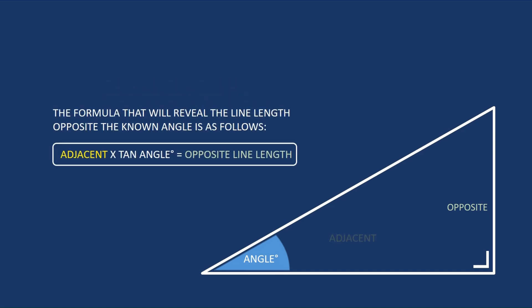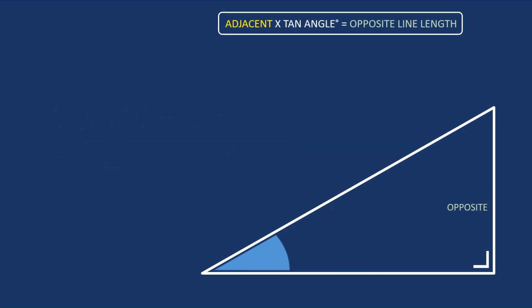You will need your scientific calculator here again. So here's the formula as alluded to: it's adjacent multiplied by the TAN of the angle, and that will equal the opposite line length when you use that formula on your calculator.